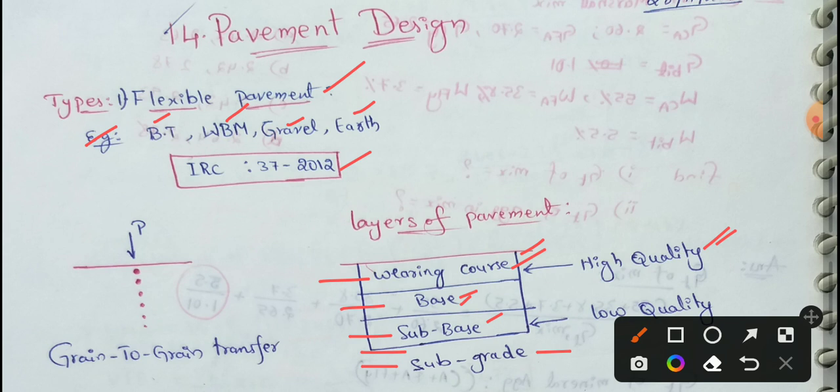Flexible pavement stability depends upon aggregate interlock particle, friction and cohesion. Aggregate interlock particle, friction and cohesion depends on the stability of flexible pavement.